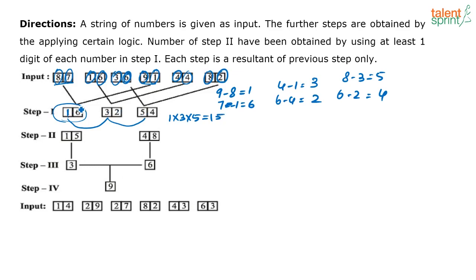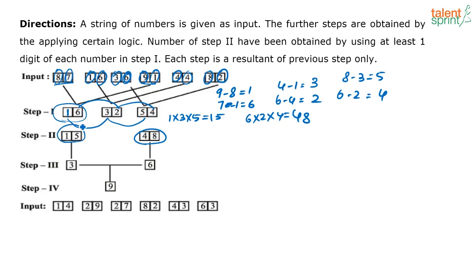Similarly, the second set of numbers is 6, 2, and 4. So 6 × 2 × 4 equals 48. When you multiply all the first-box numbers together you get 15, and multiplying the second-box numbers gives you 48.